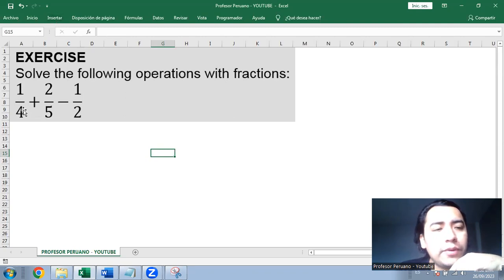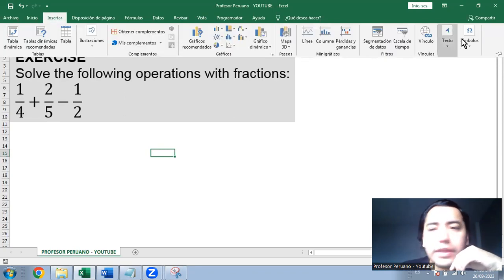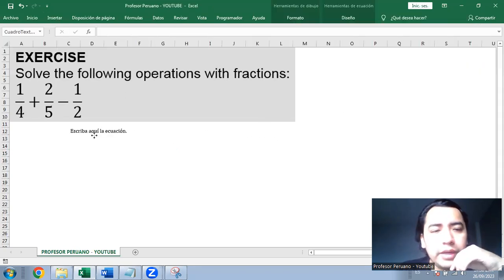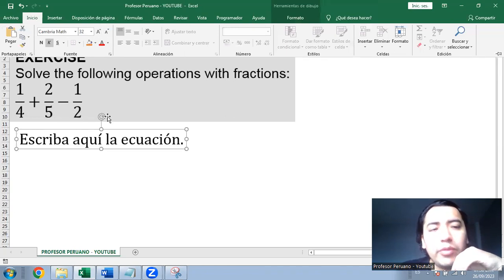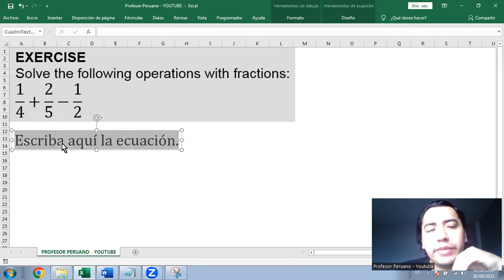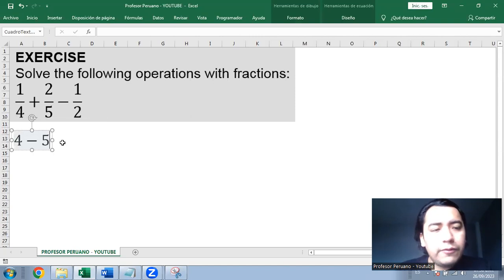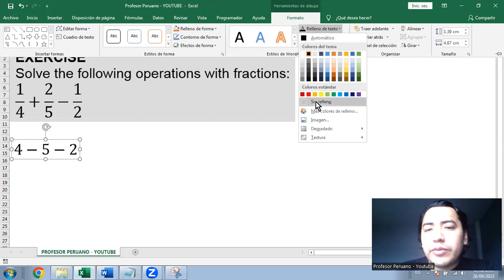We have 1/4 plus 2/5 minus 1/2. So in this case, we need to calculate or determine the least common multiple of all the denominators. So we take 4, 5, and 2, and we are going to get the least common multiple.